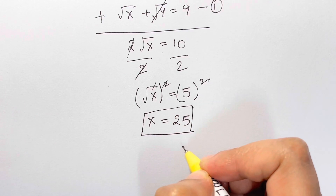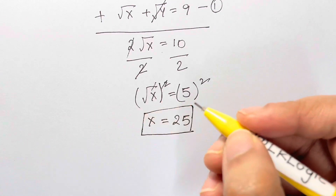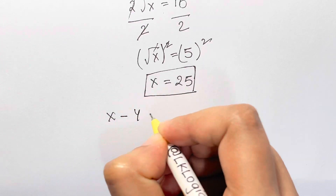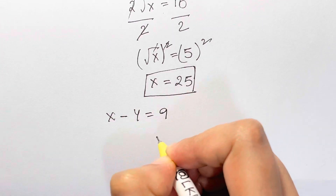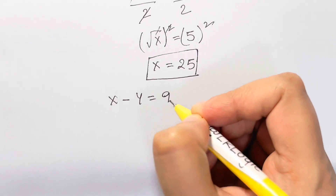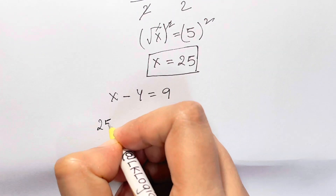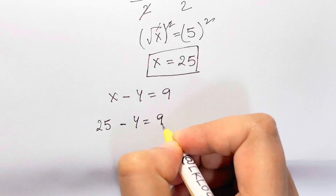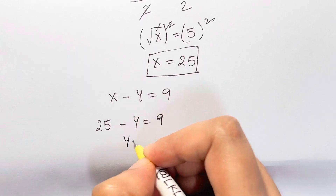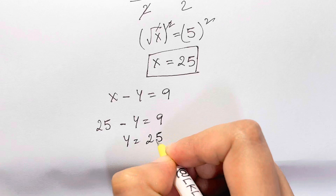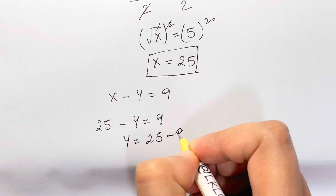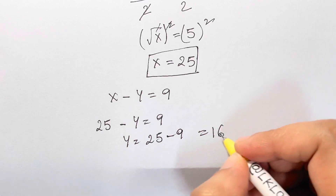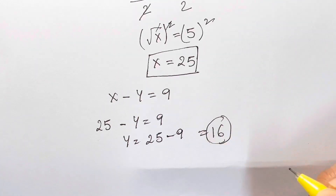Finding y is super easy. We substitute back into equation 2: x minus y equals 9. Putting x as 25, we get 25 minus y equals 9, so y equals 25 minus 9, which equals 16.